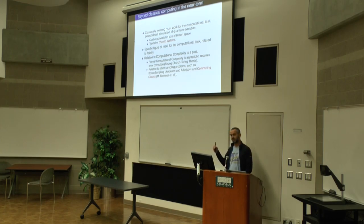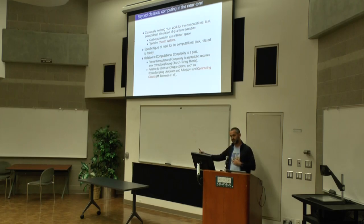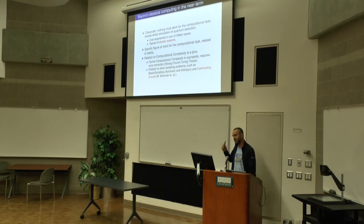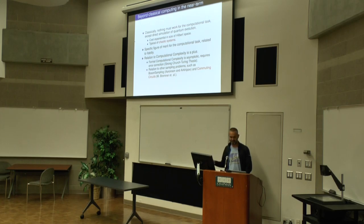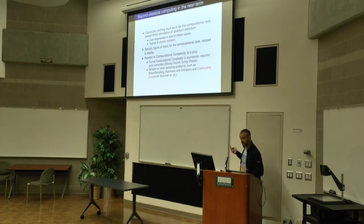But if there is another way to solve the computational task — like factoring, you don't need to simulate Shor's algorithm to factor, you just factor — then probably this is going to be hard to do with 50 qubits beyond what a classical computer can do. You cannot factor with 50 qubits anything that a classical computer or my watch cannot factor. So we need a task where the only way to solve it is to really simulate the quantum problem directly. And that's what's typical of chaotic systems.